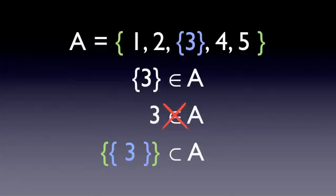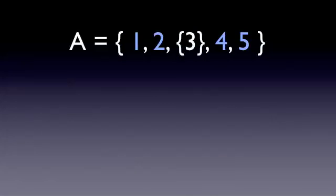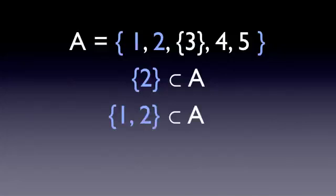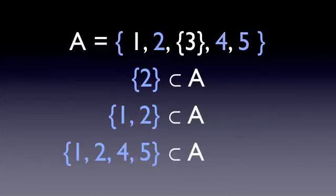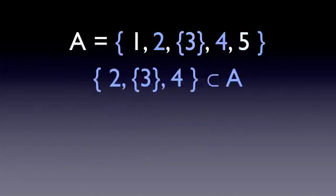Now if we look at the set again, we can see that elements 1, 2, 4, and 5 are not sets. So if we want to specify a subset containing these elements, we only use one pair of braces. For example, here we have defined a subset of set A that contains element 2. Since 2 itself is not a set, we only use one pair of braces. Similarly, we can also define a subset that contains 1 and 2, or 1, 2, 4, and 5. Notice that these only use one pair of braces. We can also define a subset that contains 2, 4, and the set that contains 3. Notice that we are still treating the set that contains 3 as just another element.